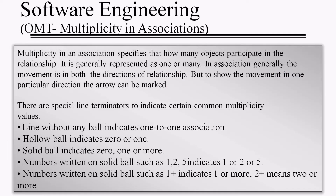Multiplicity in associations: the binary association specifies how many objects participate in a relationship. It is generally represented as one or many in an association. Generally the traversal is in both directions of the relationship, but to show movement in one particular direction, an arrow can be marked.